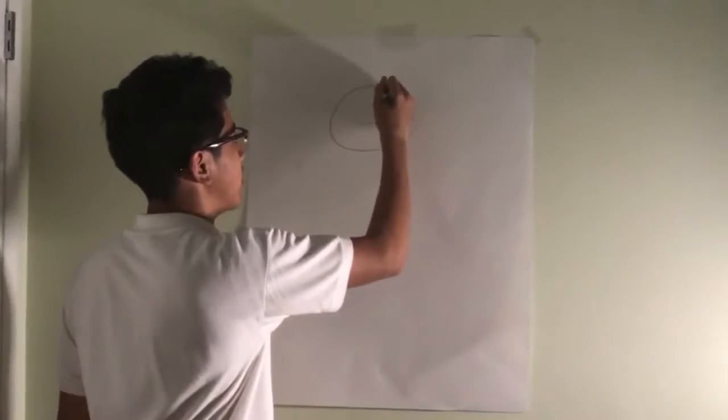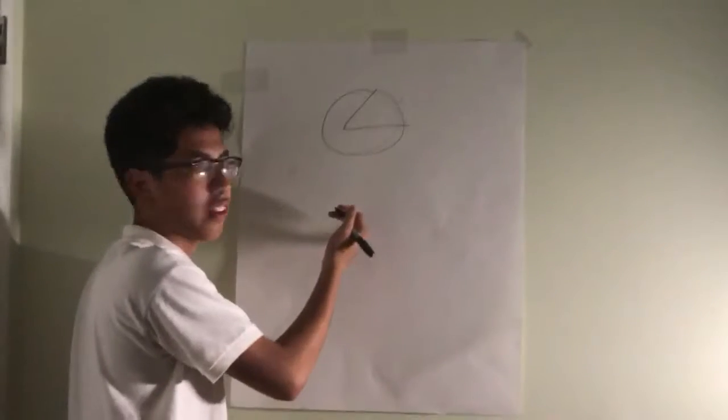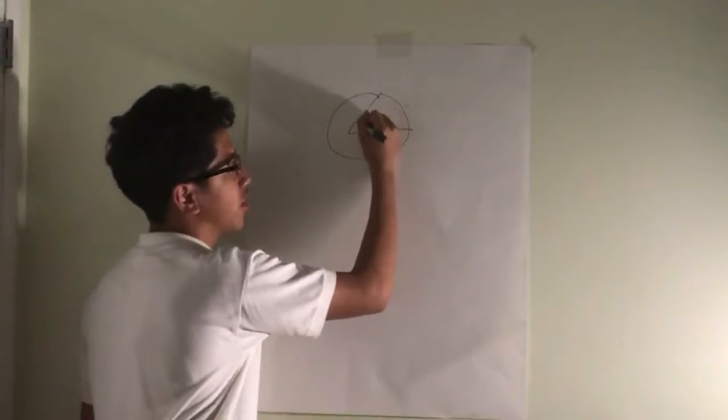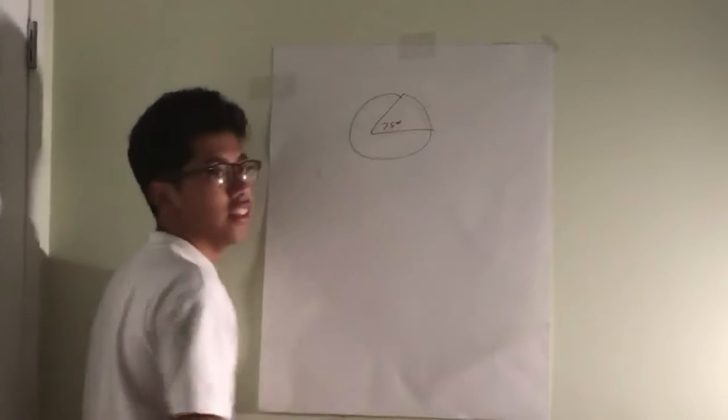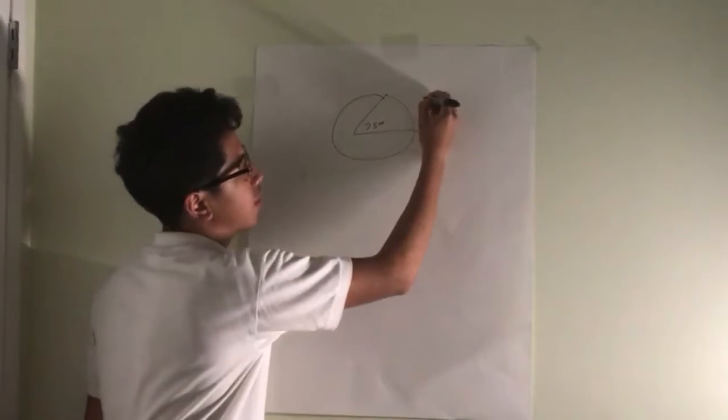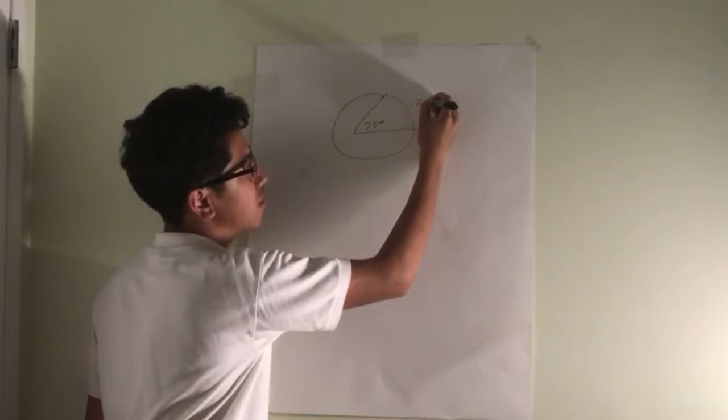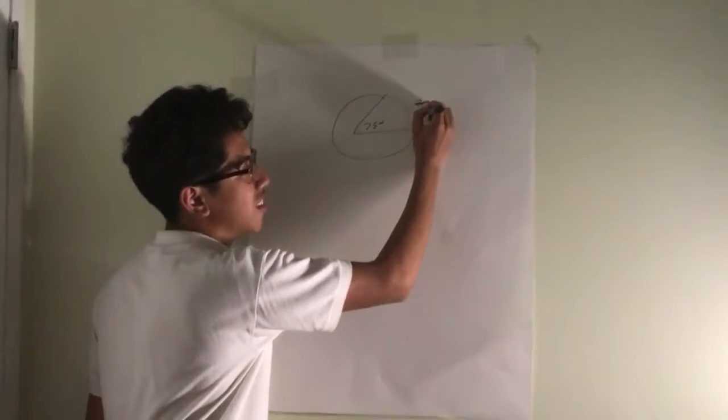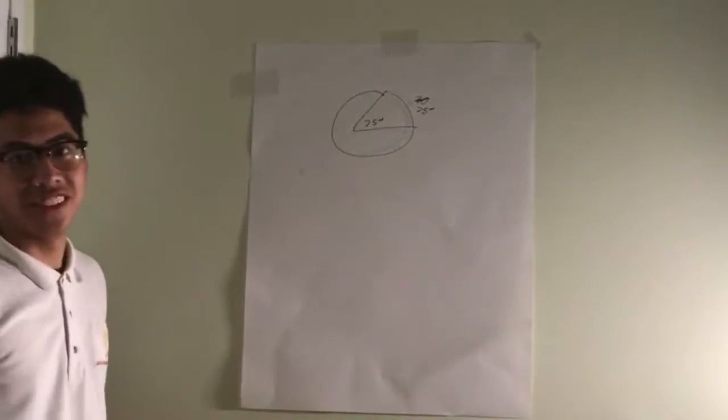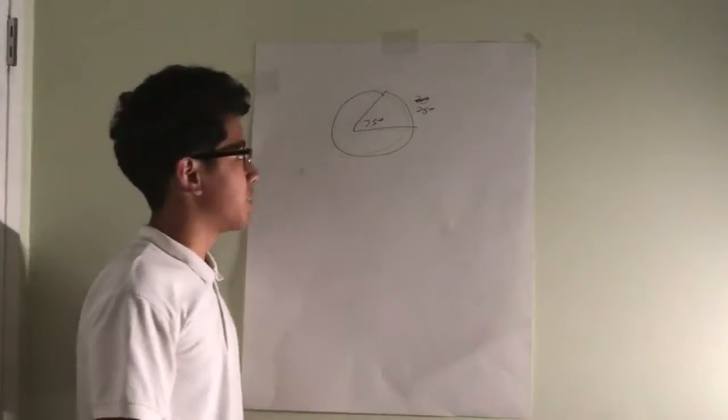One is by degree, which is equal to the central angle. Say the central angle is 75 degrees. Then the measure of the arc length would also be 75 degrees. And there's also measured in distance.